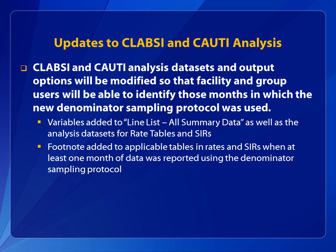CLABSI and CAUTI analysis data sets and output options are modified in 2015 so that facility and group users can identify those months in which the new denominator sampling protocol was used. Specifically, variables are added to the line list, all summary data, and analysis data sets for the applicable rate tables and standardized infection ratios or SIRs. While the variables are added to the rate table and SIR analysis data sets, they will not appear in the resulting rate table and SIR output; therefore, users will need to export the analysis data set for this detail. In addition, a footnote is added to applicable tables in rates and SIRs when at least one month of data was reported using the denominator sampling protocol.